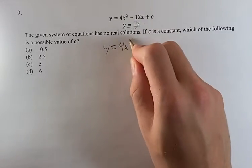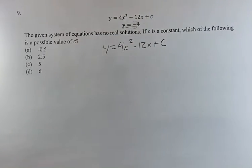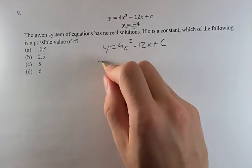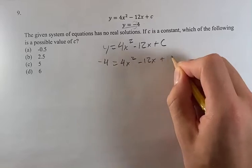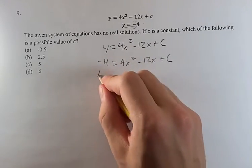So if y equals 4x squared minus 12x plus c, that's going to turn into negative 4 equals 4x squared minus 12x plus c. If we add 4 to both sides,